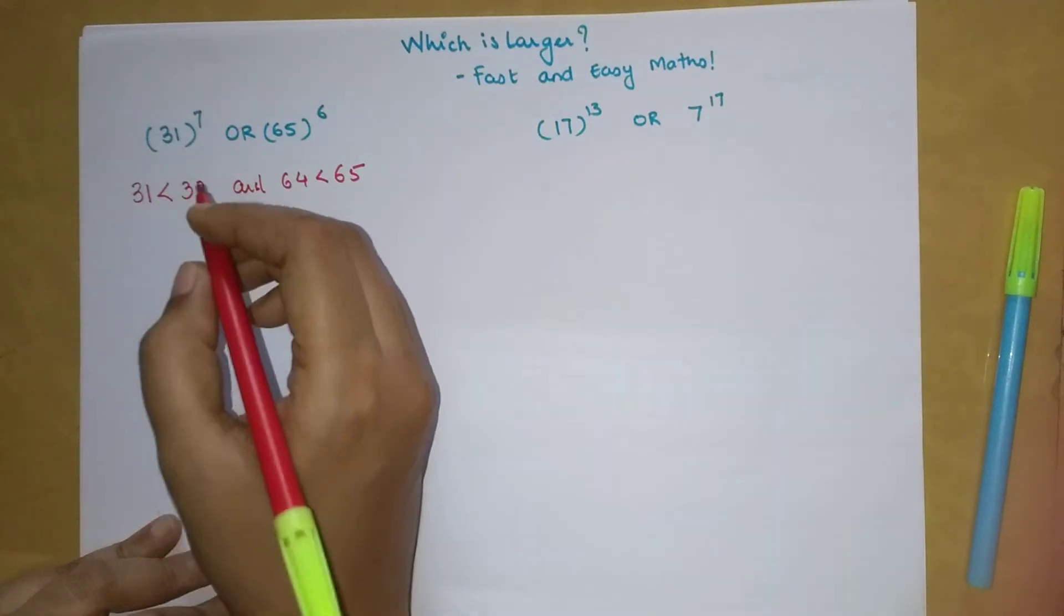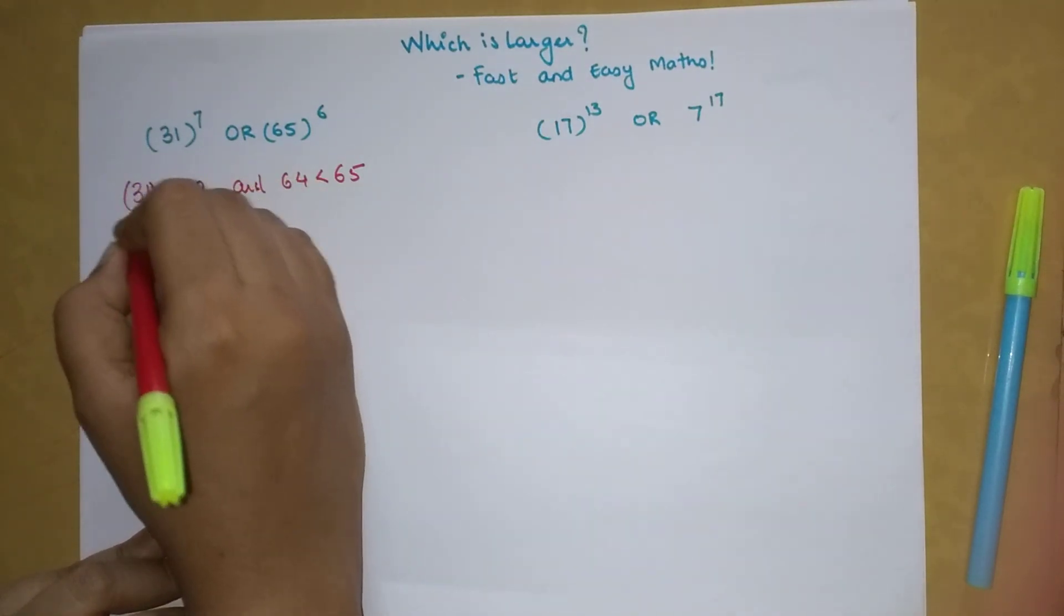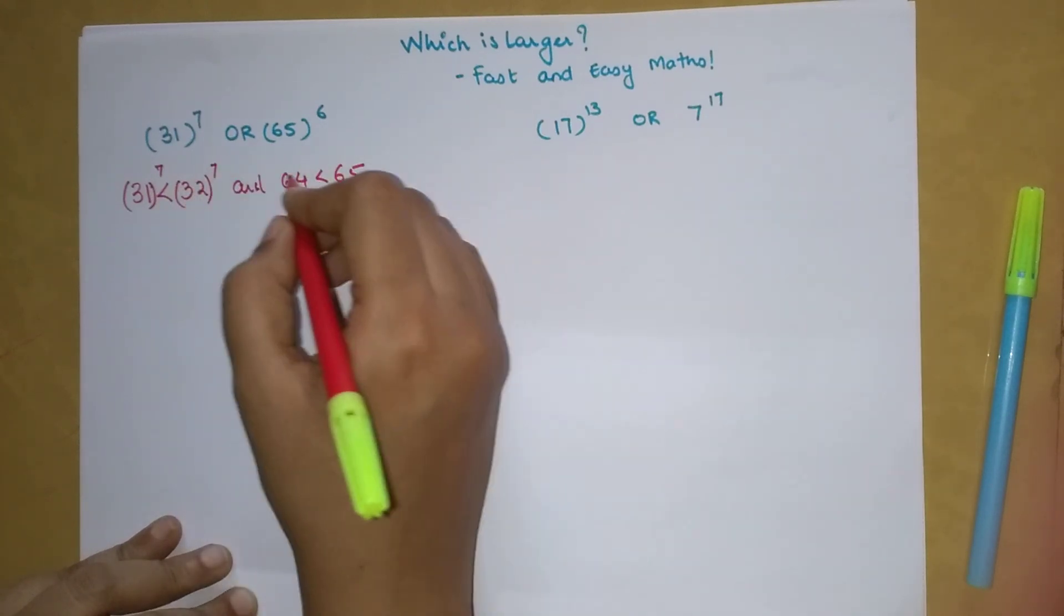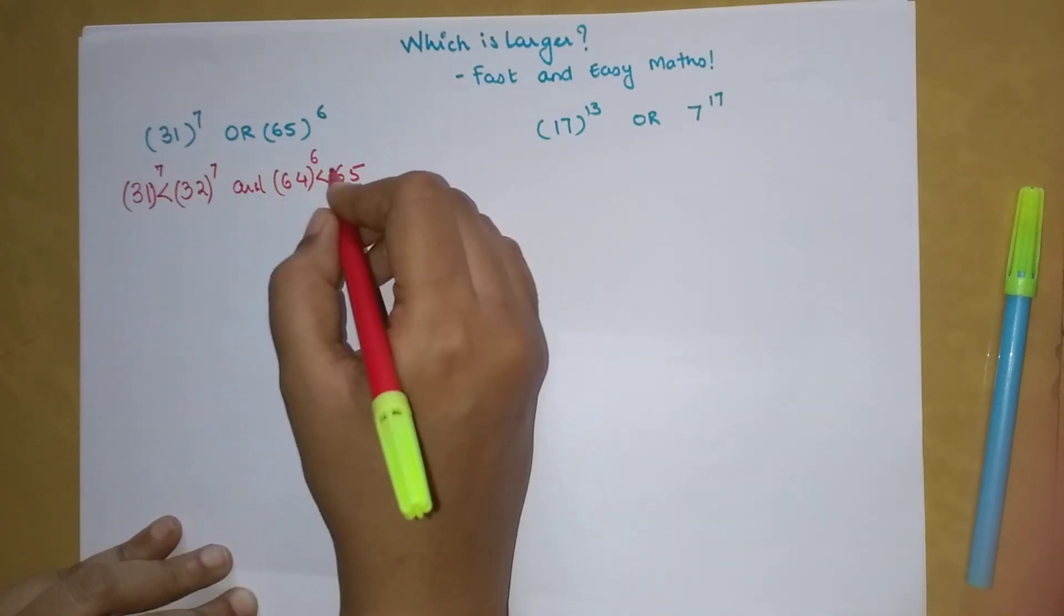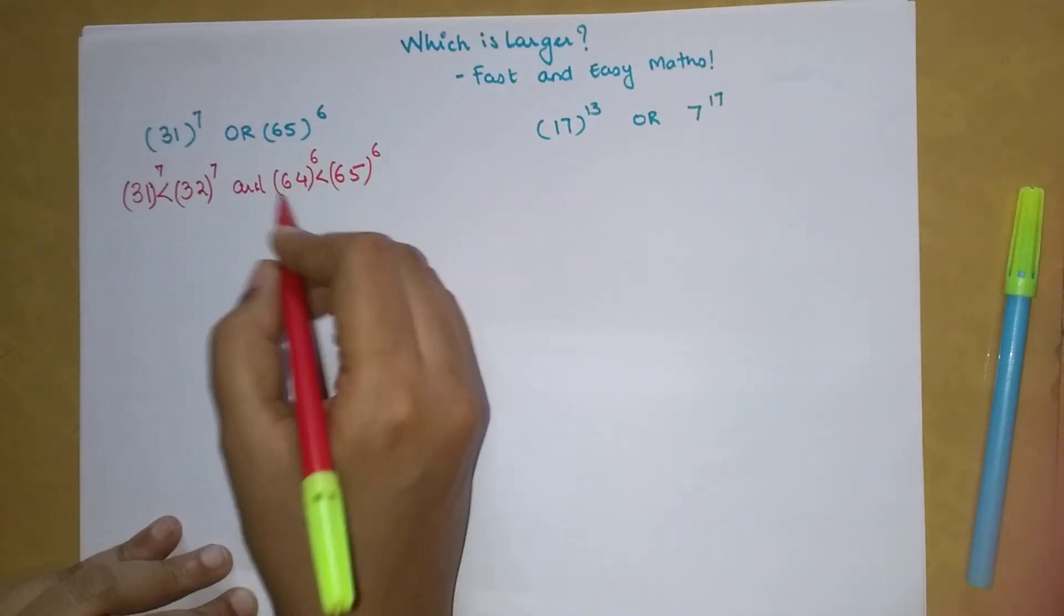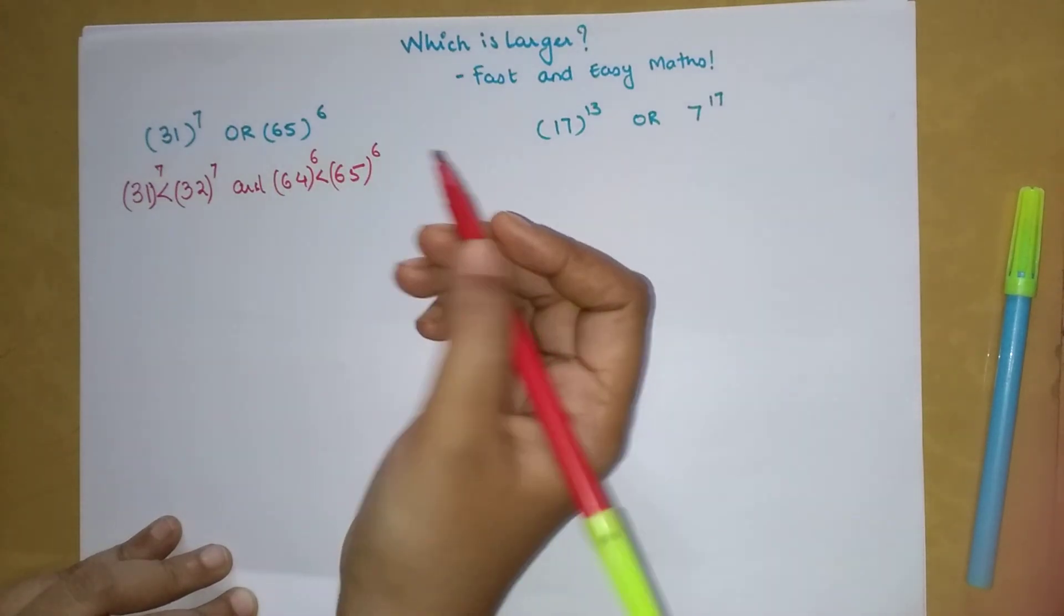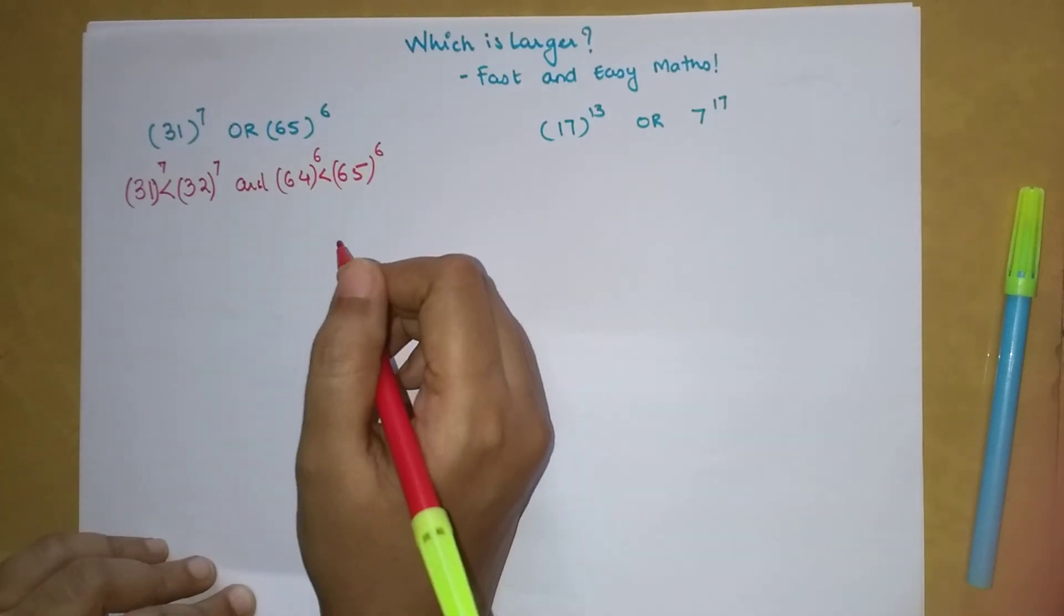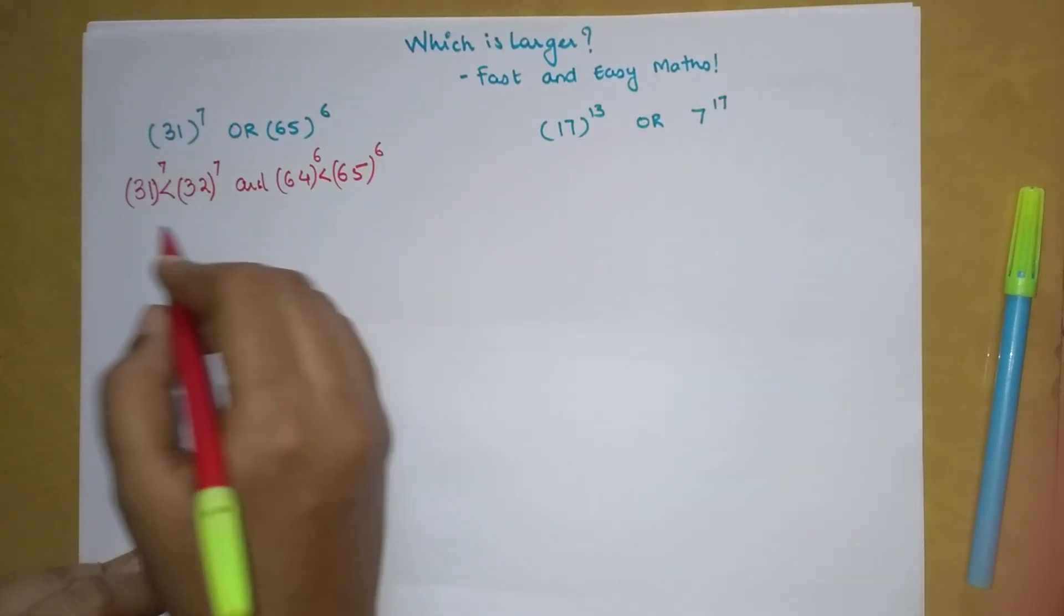Let's put the same index. If 64 is less than 65, then I can also say that 64 raised to 6 will also be less than 65 raised to 6.